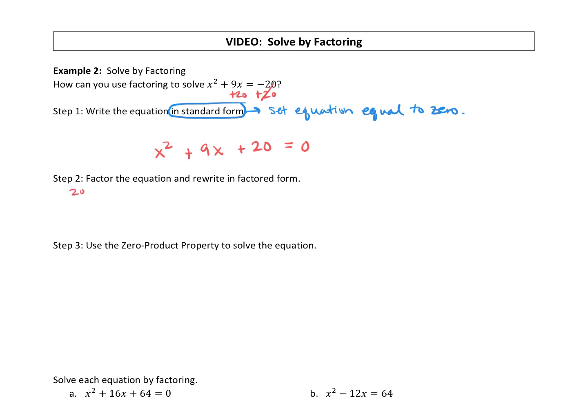So factors of 20 that add up to 9. If you can think of them in your head without writing out your factor pairs, great. That is where I would like all of us to get. If it helps you to write out your factor pairs, that is fine too. So there's all the factor pairs. We can see that the 4 and the 5 will add up to the 9. So let's rewrite this in factored form. We're going to say x plus 4 times x plus 5, and we just carry it on our equal 0.